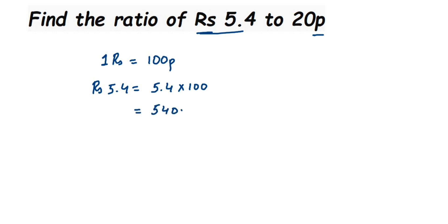Now we're going to find the ratio. Rupees 5.4 to 20 is equal to 540 paisa to 20 paisa. Usually we don't write units when you're writing ratios.